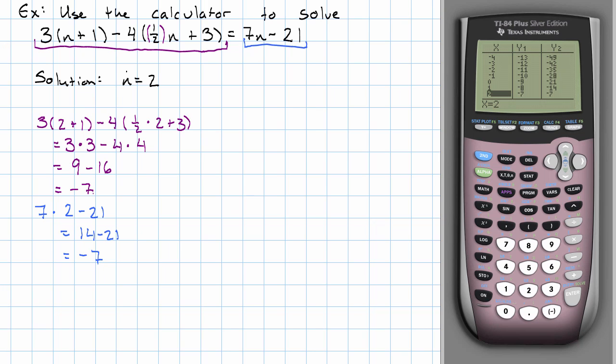Since negative 7 and negative 7 are equal, the value n equals 2 really does make this equation true. So it really is the solution.